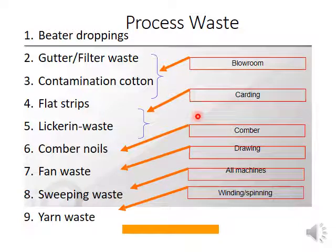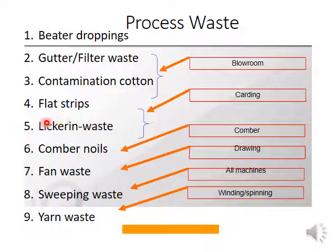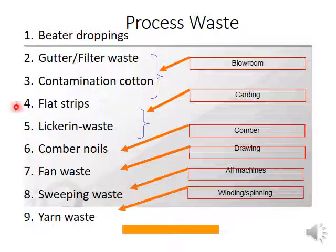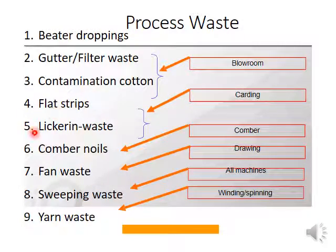In carding, the main wastes generated are flat strips and licker-in waste. Licker-in waste contains much of the seed coat material and trash material. Flat strips contain short fibers removed between the cylinder and flats, and also nep materials. The percentage of waste generated in carding may vary around 7 to 8 percent. For imported cotton, it may be as low as 4 to 5 percent, but in general, 7 to 8 percent is the norm.